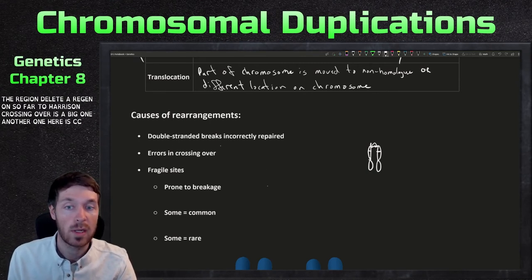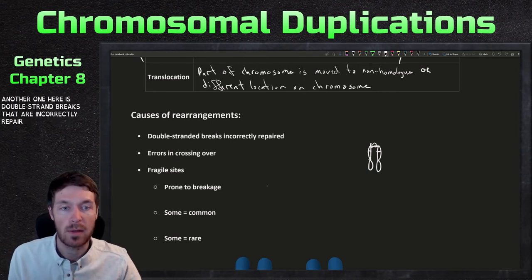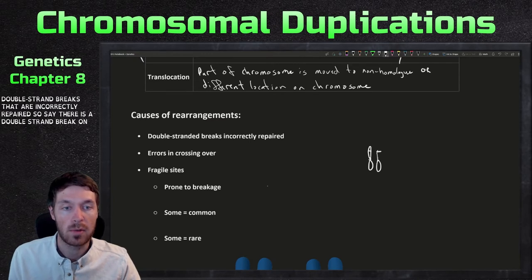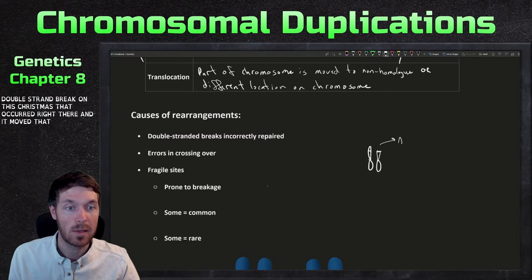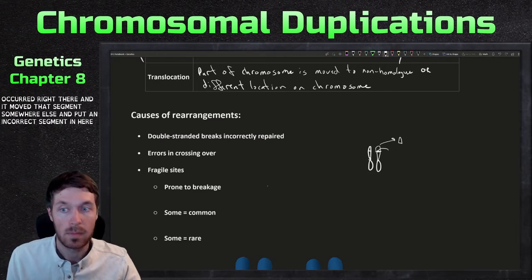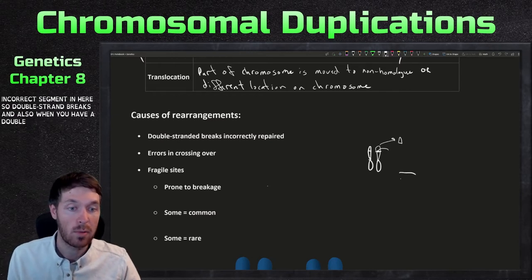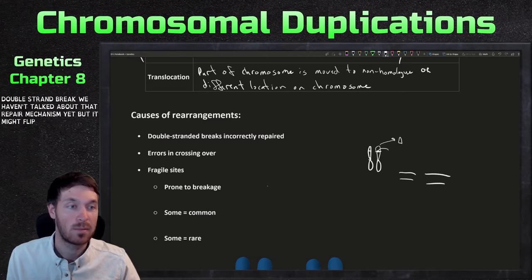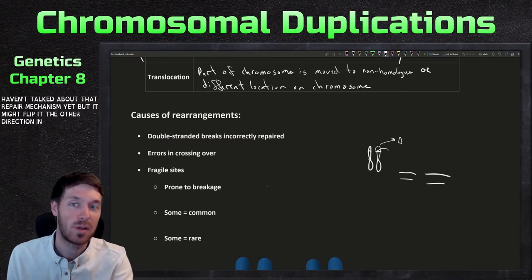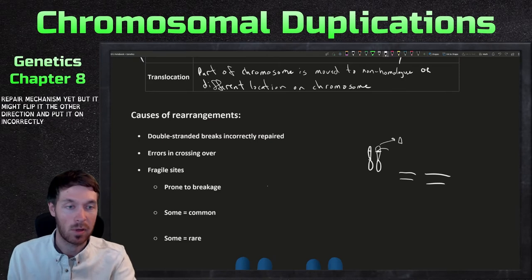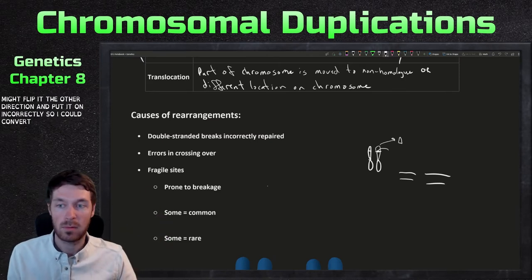Another one here is double strand breaks that are incorrectly repaired. So say there is a double strand break on this chromosome that occurred right there, and it moved that segment somewhere else and put an incorrect segment in here. So double strand breaks. And also when you have a double strand break, we haven't talked about that repair mechanism yet, but it might flip it the other direction and put it on incorrectly. So it could invert that whole region.